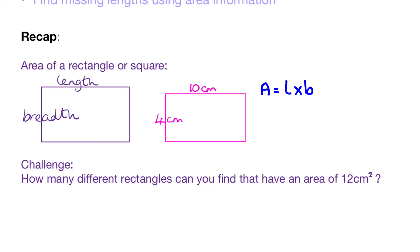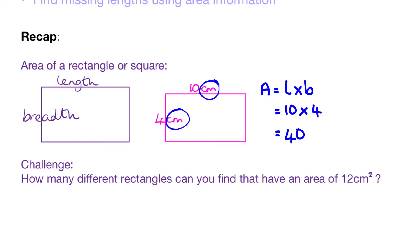Remember, we must write that down every time we calculate the area of a square or rectangle. So the length of this rectangle — it doesn't matter which one you call the length and which one you call the breadth. I'm going to call the long one across the way the length, so it's going to be 10, and the breadth down here is four. Then we just work that out: 10 times 4 is 40. And we put the correct units on — because we started with centimetres, our area is going to be in square centimetres.